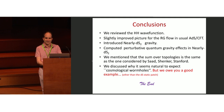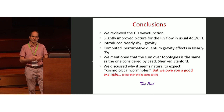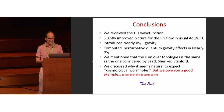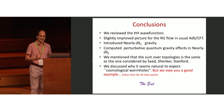In conclusions: we reviewed some aspects of the Hartle-Hawking wave function; we slightly improved the picture for the RG flow in usual ADS-CFT; we introduced nearly DS2 gravity and computed perturbative quantum gravity effects in this nearly DS2 theory; and we noted that the sum over topologies is the same as the one considered by Saad, Shenker, and Stanford — so one could say this is a reinterpretation of their formulas. We discussed why it is natural to expect cosmological wormholes, but I really owe you a good example other than the de Sitter static patch. Thank you.